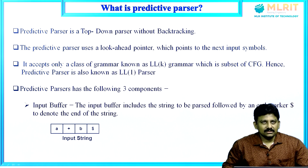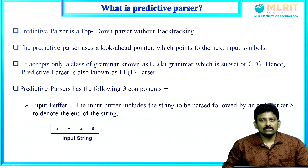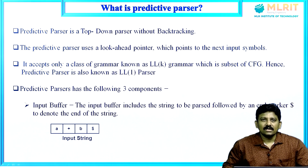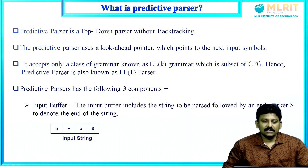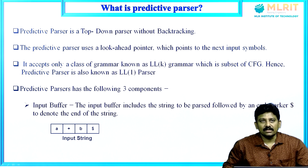Predictive parser is a top-down parser without backtracking. The predictive parser uses a look-ahead pointer which points to the next input symbol. It accepts only a class of grammars known as LLK grammar, which is the subset of context-free grammar. Hence, the predictive parser is also known as LL1 parser, where one indicates the one look-ahead input symbol.